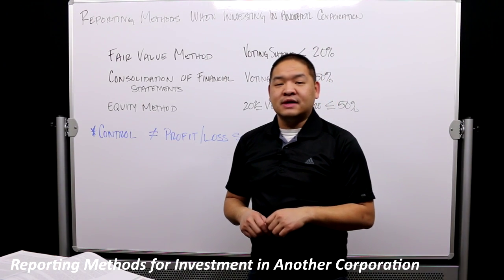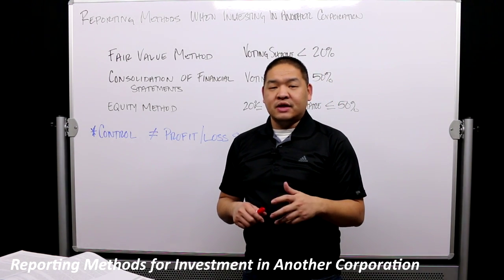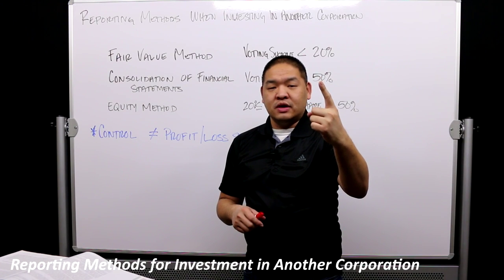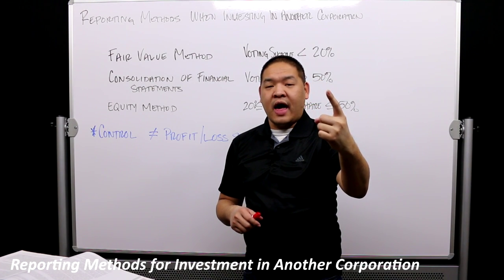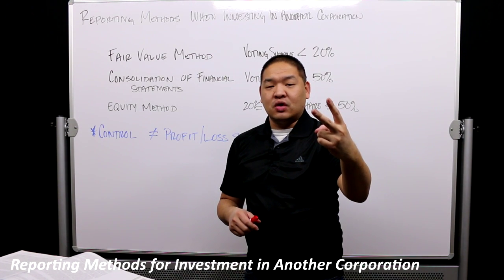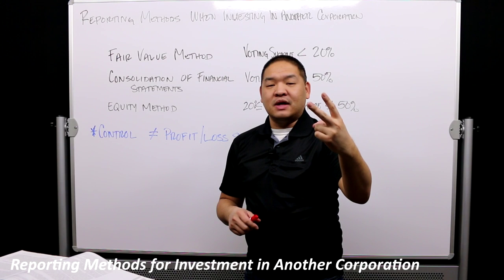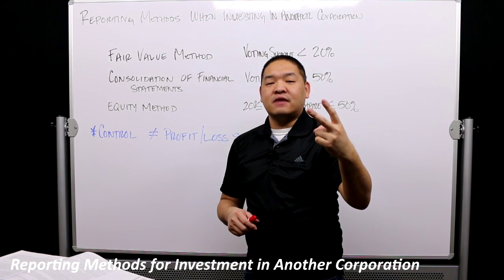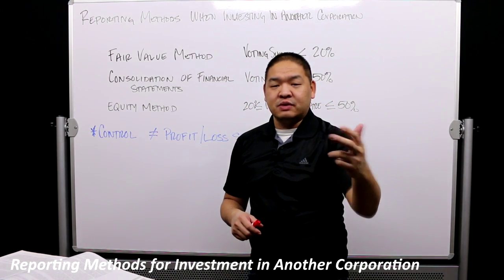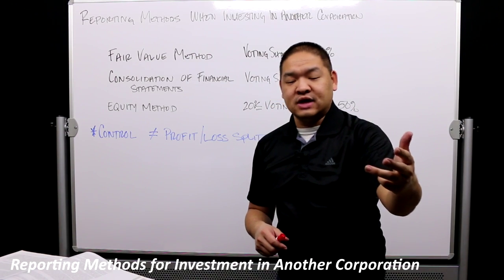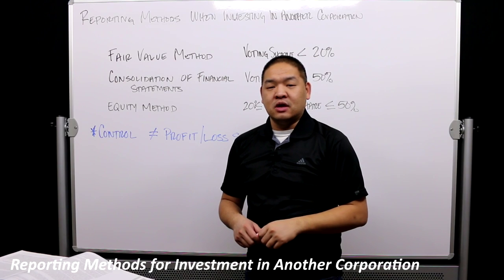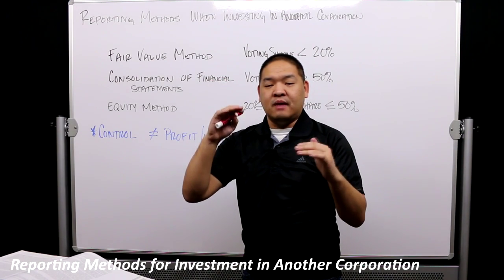There are three ways to think about control. The investor has no control — they invest their money and have no say. They have a significant amount of control, where they can influence but not fully control the organization. Or they have full control, almost like a parent-subsidiary relationship.